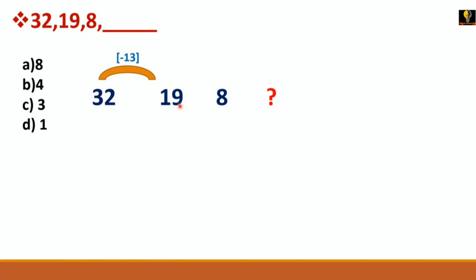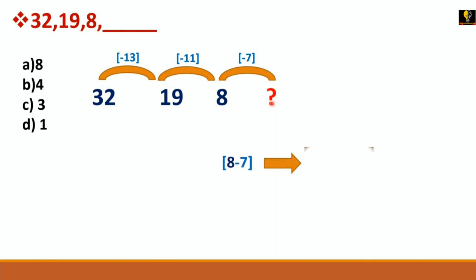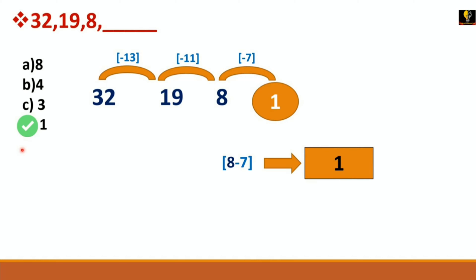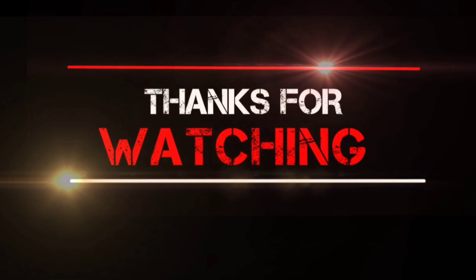Find the differences: 32 minus 13 gives 19, and 19 minus 11 gives 8. So the differences are 13 and 11 — these are odd numbers. Observed from the reverse: 7, 11, 13 are odd numbers, so the next step is minus 7. Therefore 8 minus 7 gives 1 to complete the series. The answer is option D. If you like this, please subscribe and share. Thank you so much and keep watching.